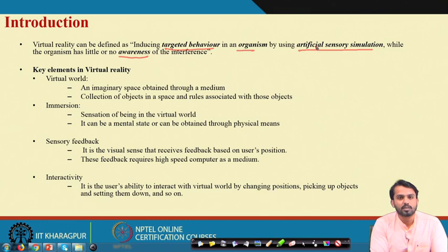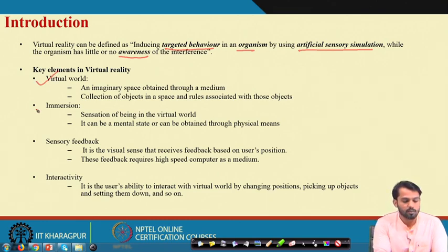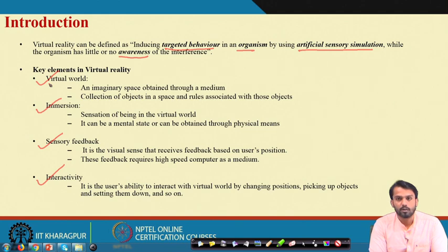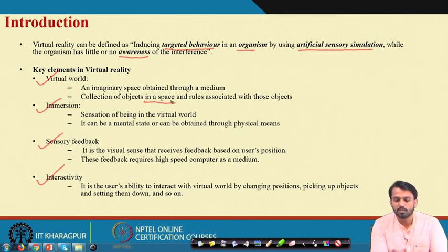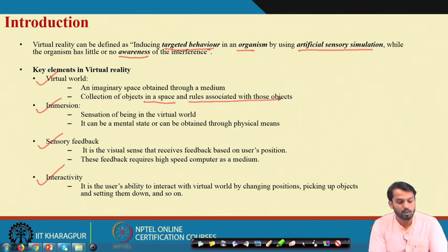What are the key elements in a virtual reality environment? The first is the virtual world — an imaginary space obtained through a medium, which is a collection of objects in a space and certain rules associated with those objects. The second is immersion. The third is sensory feedback, and the fourth is interactivity.